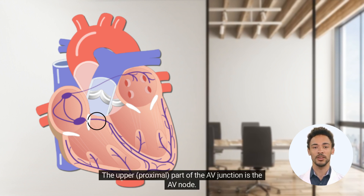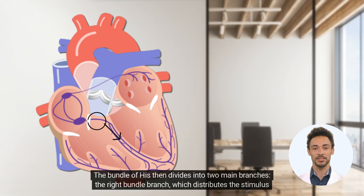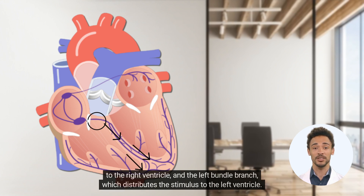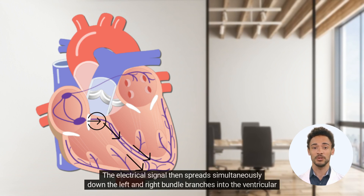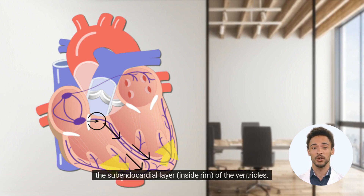The upper proximal part of the AV junction is the AV node. The lower distal part of the AV junction is called the bundle of His. The bundle of His then divides into two main branches: the right bundle branch, which distributes the stimulus to the right ventricle, and the left bundle branch, which distributes the stimulus to the left ventricle. The electrical signal then spreads simultaneously down both bundle branches into the ventricular myocardium by way of specialized conducting cells called Purkinje fibers, located in the subendocardial layer inside the rim of the ventricles.